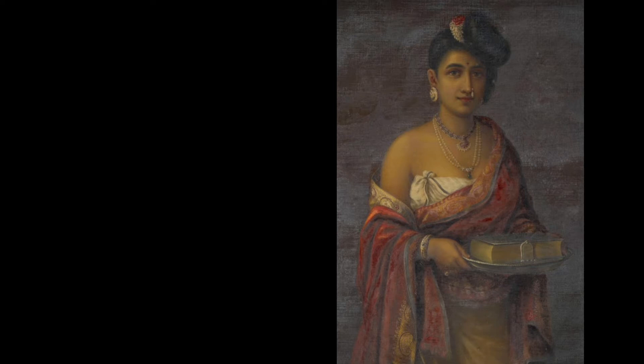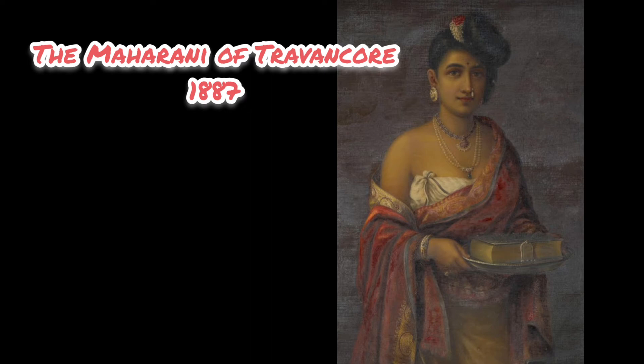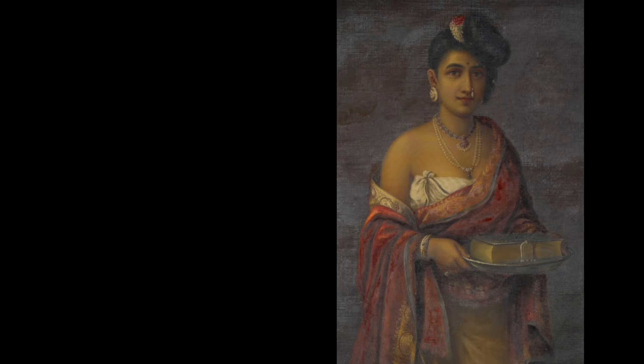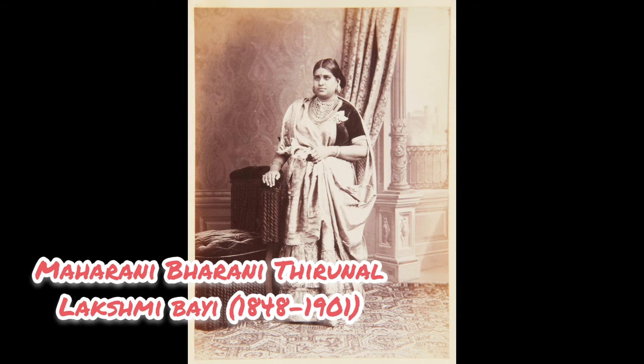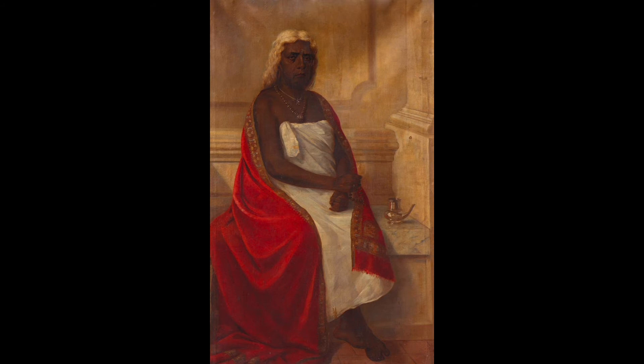The hairstyle and dressing style of a Nair woman tells us a lot of things. Here you have the Maharani of Travancore, who is also a Nair. But the shawl tells us a lot about her elevated status that came with marrying the king. Raja Ravi Varma was known for painting royalty. He even painted Maharani Bharani, who was considered to be a bride to Raja Ravi Varma himself, though she rejected him.